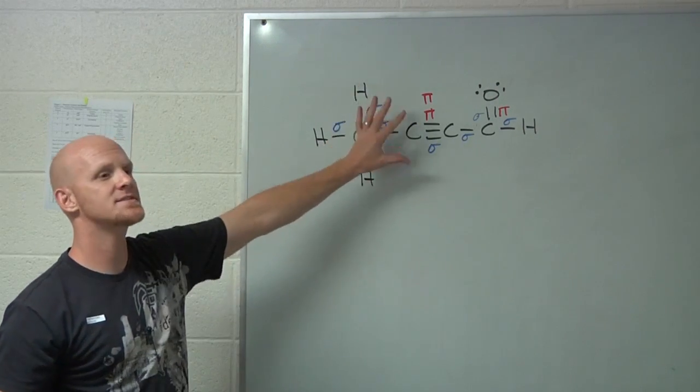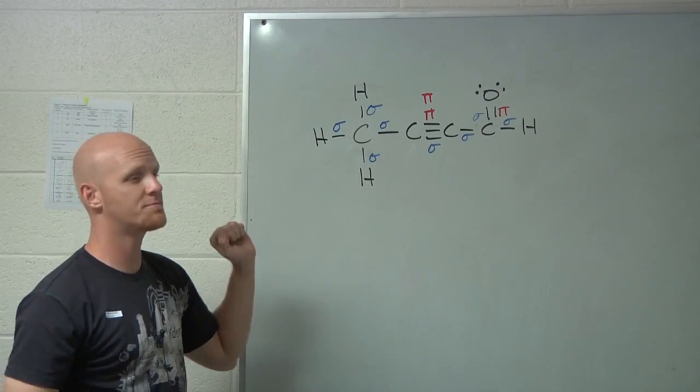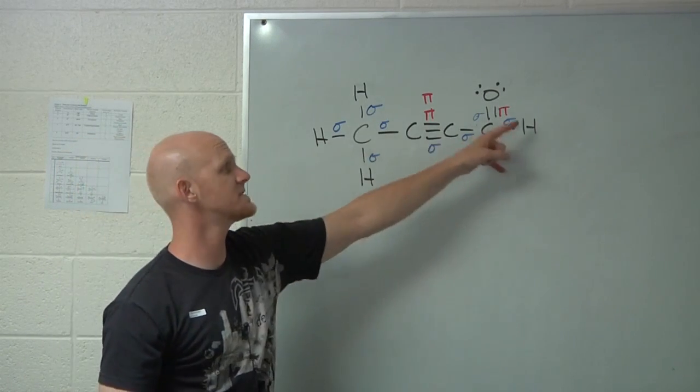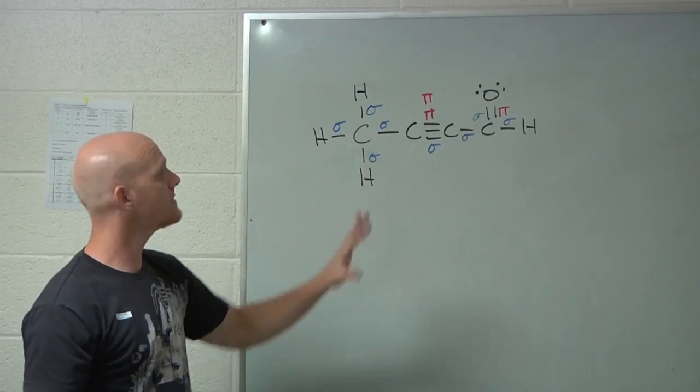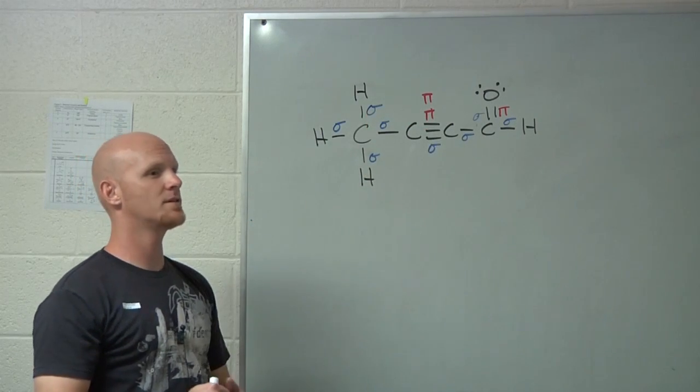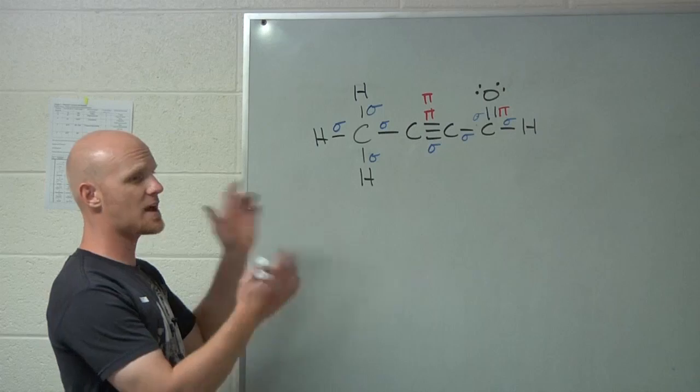And so first you just got to recognize how to count up the number of sigma and pi bonds in a molecule. You may get a question on the test that just gives this molecule and says, the following molecule has blank sigma bonds and blank pi bonds. You just count them up.